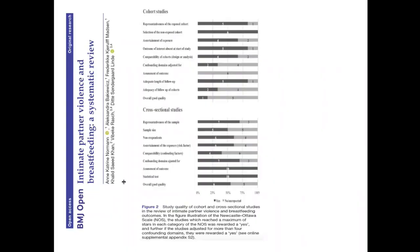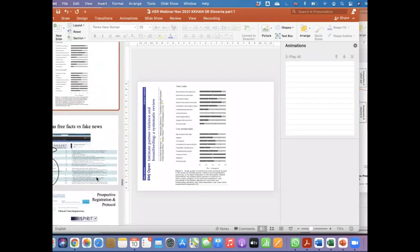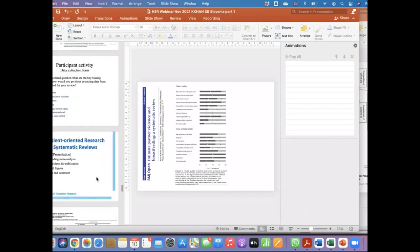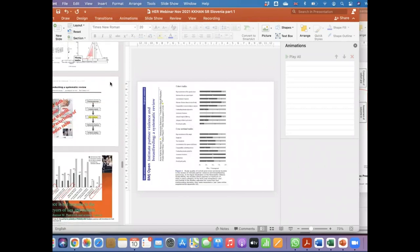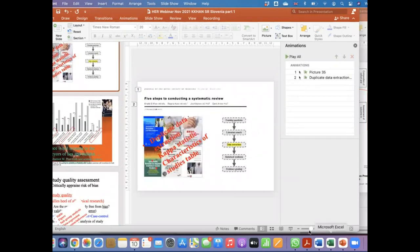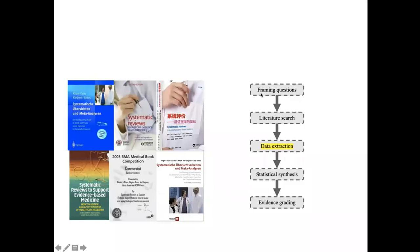At this stage, I'm just going to take stock of where we are. We have gone through framing the question for a systematic review and literature search for a systematic review. In the literature search, we have clarified that we need to be reporting the search term combination, the list of excluded studies with reason for exclusion, the flow diagram of inclusion of studies, and an assessment of the possibility of publication bias affecting our search.